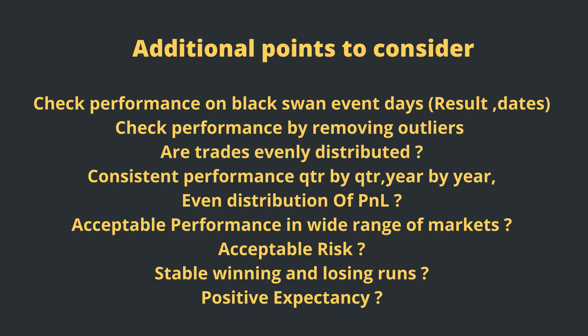Additional points to consider while building a trading system: check the trading system performance on black swan event days — what happened to your strategy on such days in the past. Also check performance by removing outliers. For example, if you're trading an option buying system and for 100 trades you don't make money, but one trade gives you 400x or 200x profit, overall the system looks profitable — but if you remove just that one trade, the system is net negative. So remove the top 10% wins and top 10% losses. Also make sure the strategy gives consistent performance quarter by quarter, year by year, within your risk limits, with stable winning and losing streaks comfortable to your risk appetite.